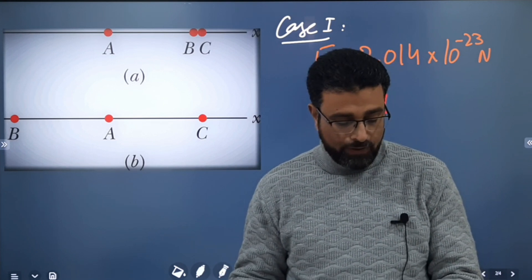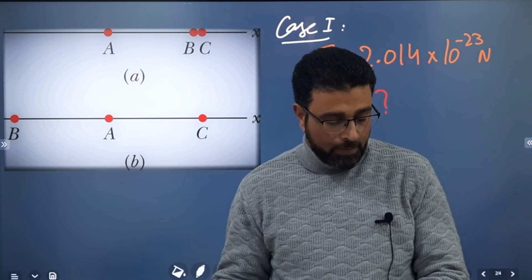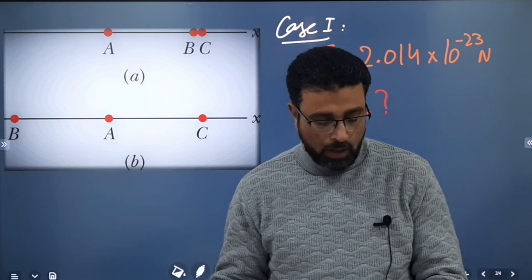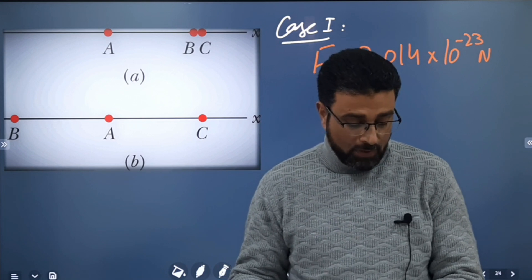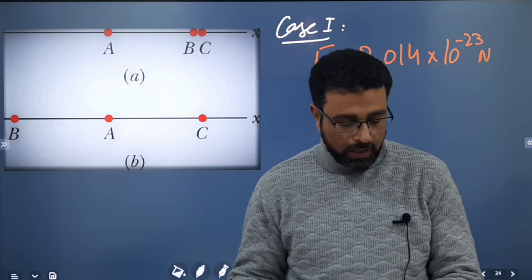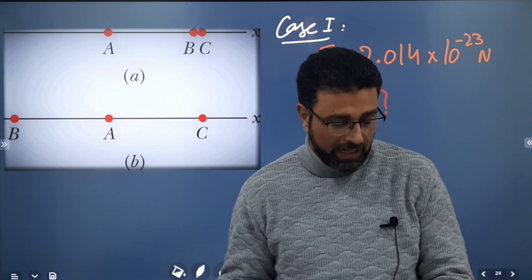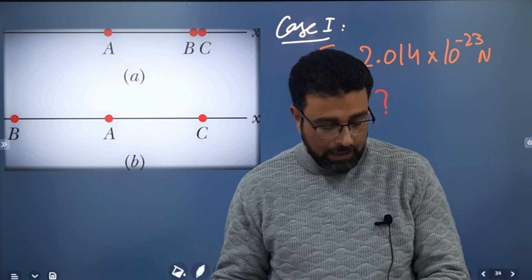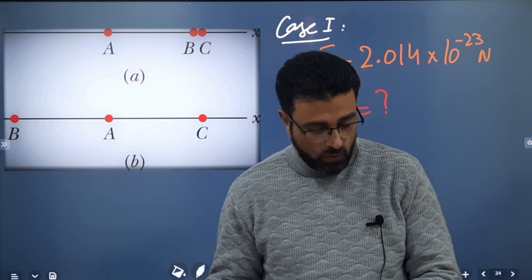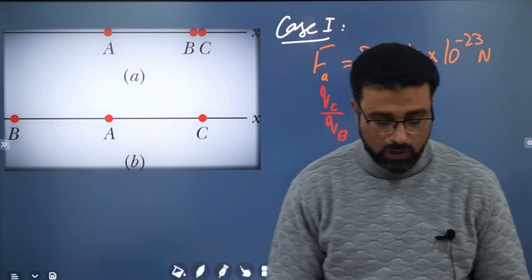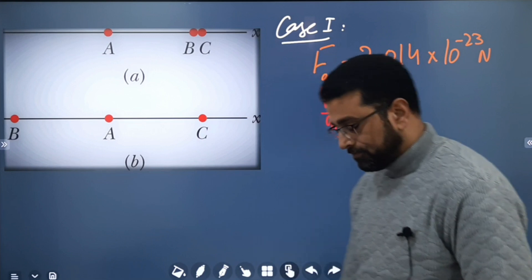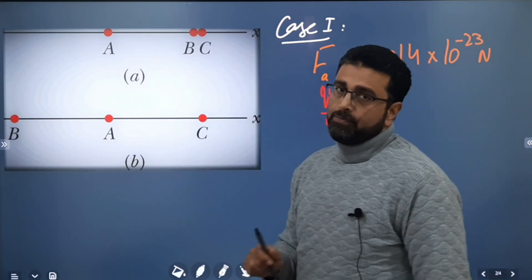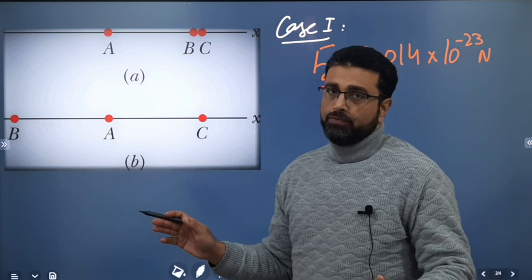In figure B, particle B has been moved to the opposite side of A but is still at the same distance from it. The net force on A is now 2.877 × 10⁻²⁴ newtons in the negative direction of the x-axis. What is the ratio qc/qb?